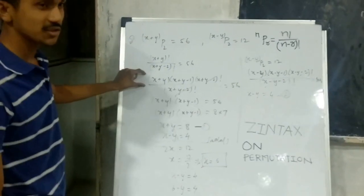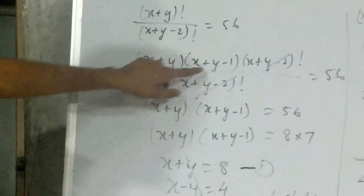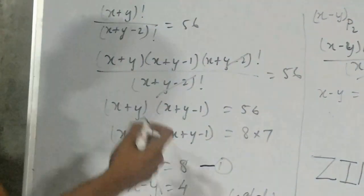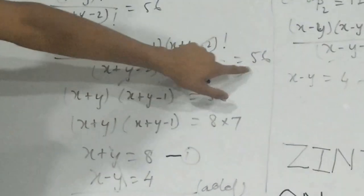After expanding this factorial we get x plus y into bracket x plus y minus 1, into bracket x plus y minus 2 factorial. And below there is x plus y minus 2 factorial. So the parts will get cancelled, is equal to 56.